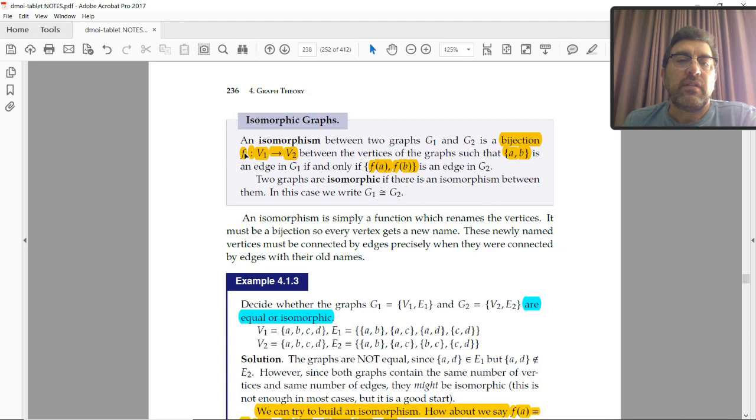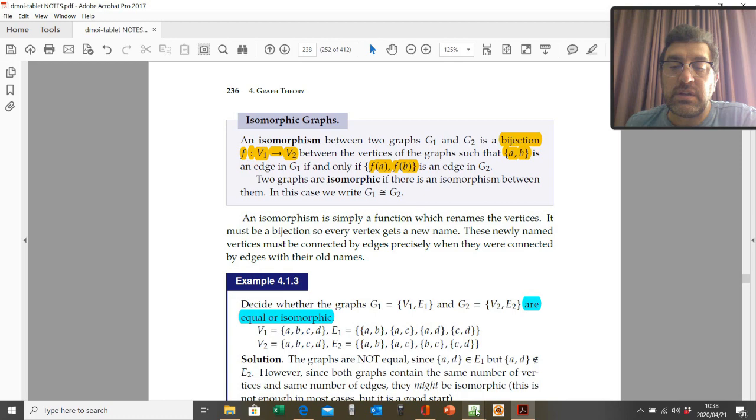Now, we're going to check for that in a second. So, we've got to check, is it a bijection? That maps the vertices in set 1 onto the vertices in set 2. In such a way that if the edge A,B is an edge in G1, if and only if F of A, F of B, so the mappings of those, also forms an edge in G2.